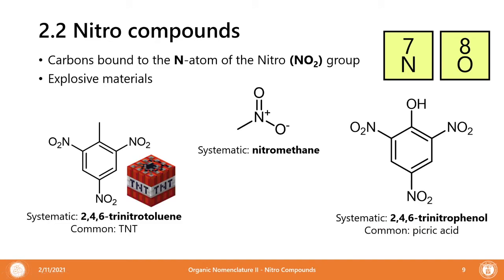Next come the nitro compounds. We can use the same system for naming as with alkyl halides. In nitro compounds, carbons are bound to the nitrogen atom of the nitro group. As you can see, they have a formal charge of N in a positive form and oxygen in a negative form — it actually resonates between each form. A popular nitro compound is 2,4,6-trinitrotoluene, also known as TNT. Nitromethane and 2,4,6-trinitrotoluene are also explosives.